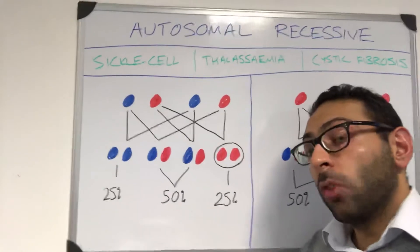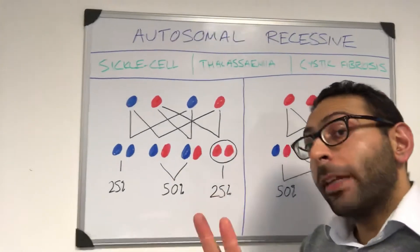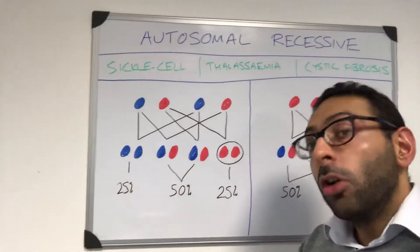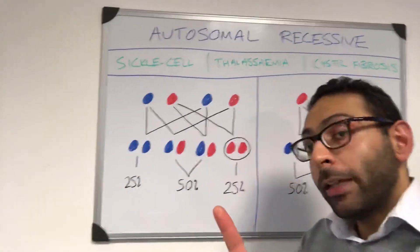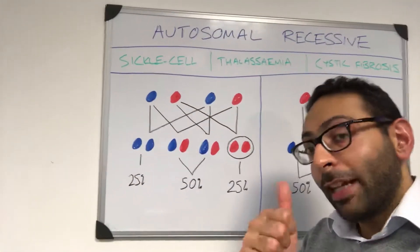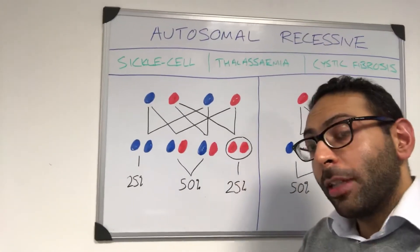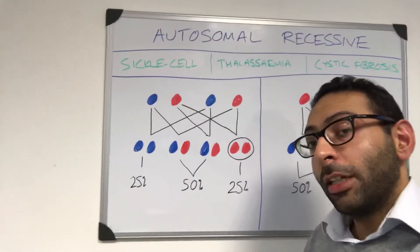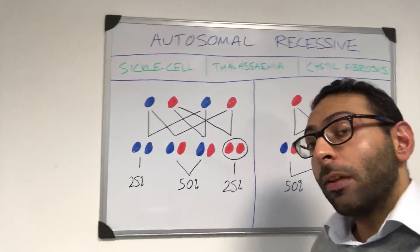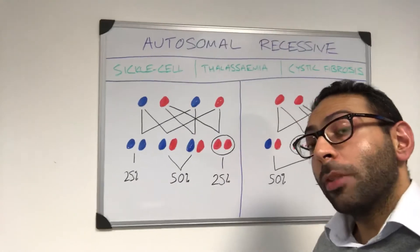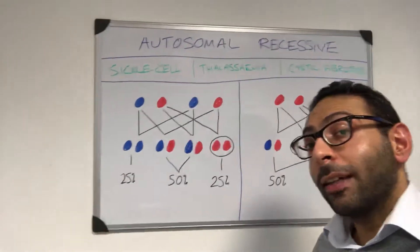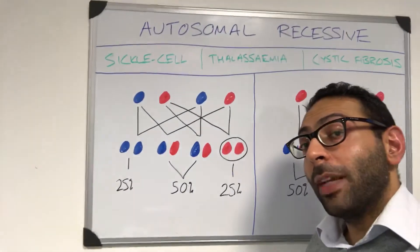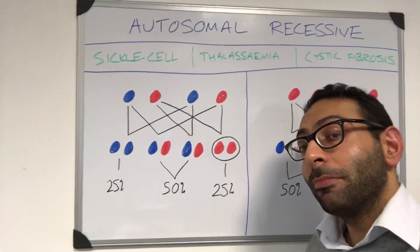Autosomal recessive assessment is all about whether you have two affected genes and have the condition, one affected gene and are a carrier, or no affected genes and have nothing to do with the condition whatsoever. Hope this helps — looking forward to catching up with some of you at our second clinical AKT Crammer this evening. See you soon!